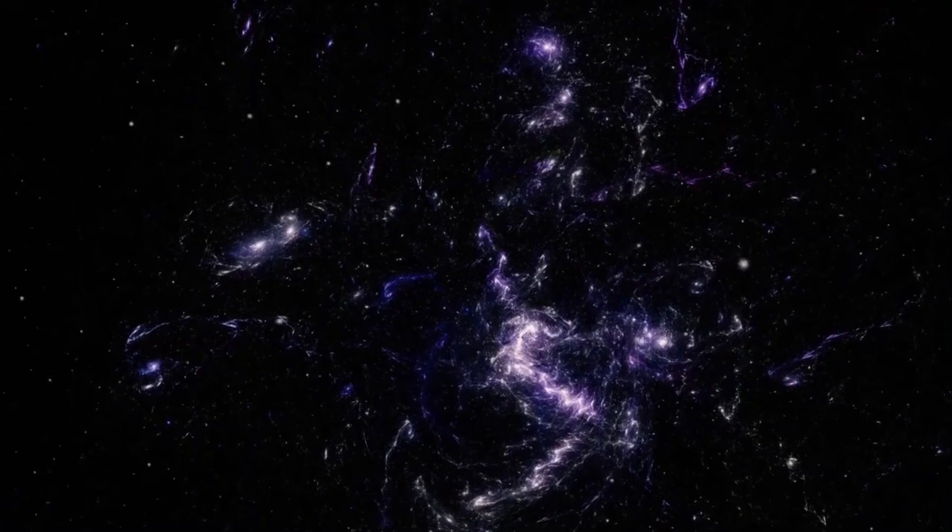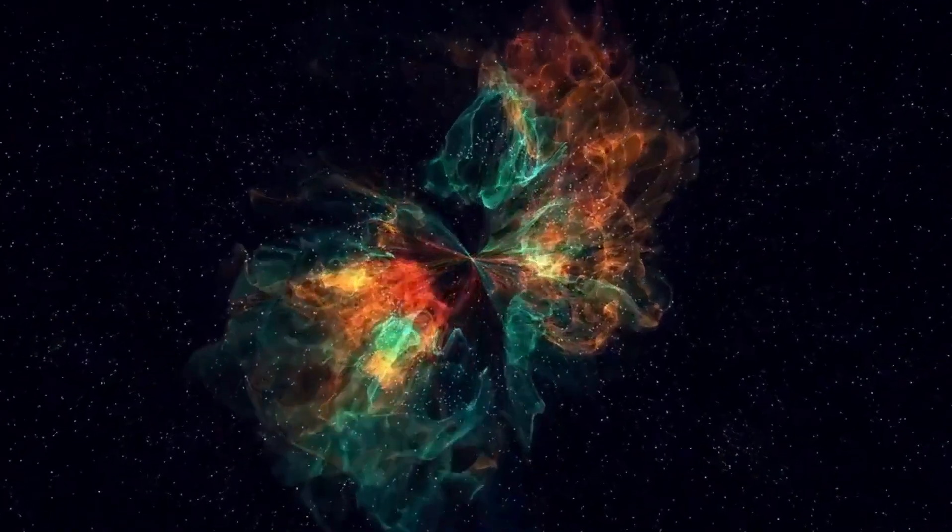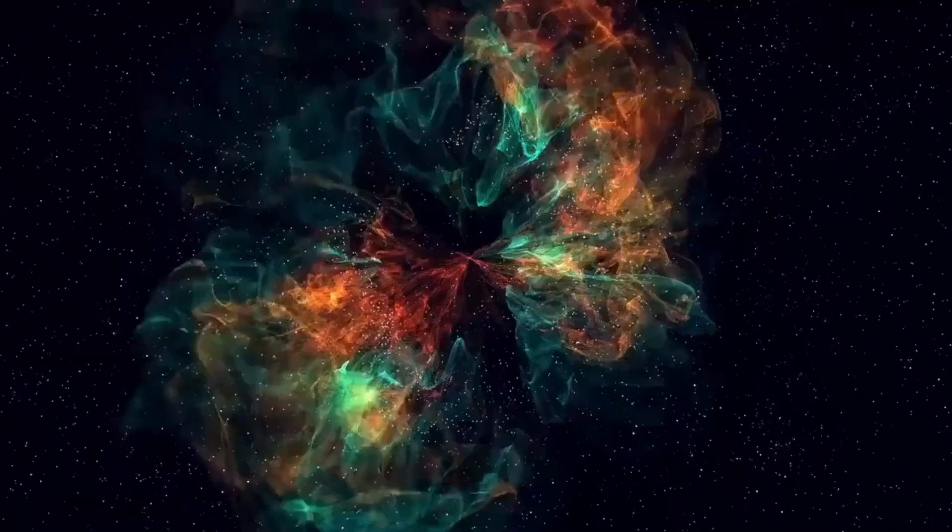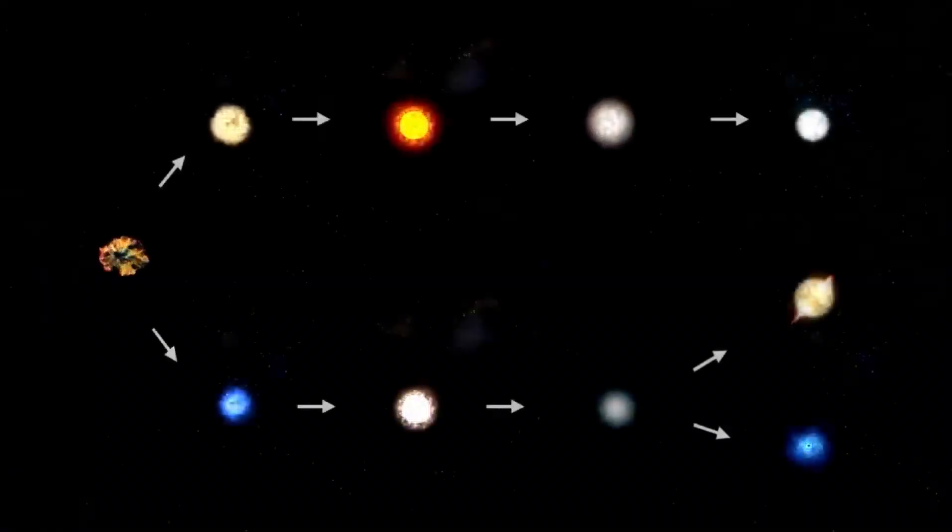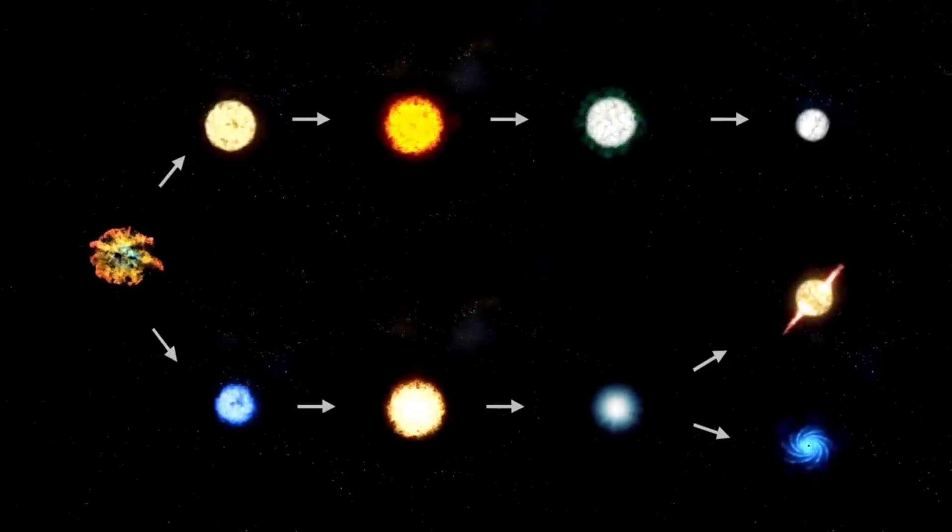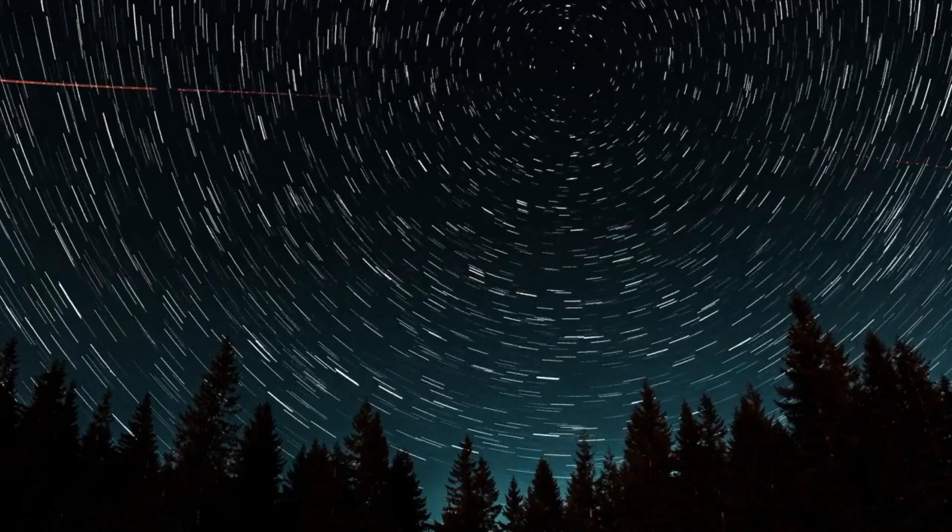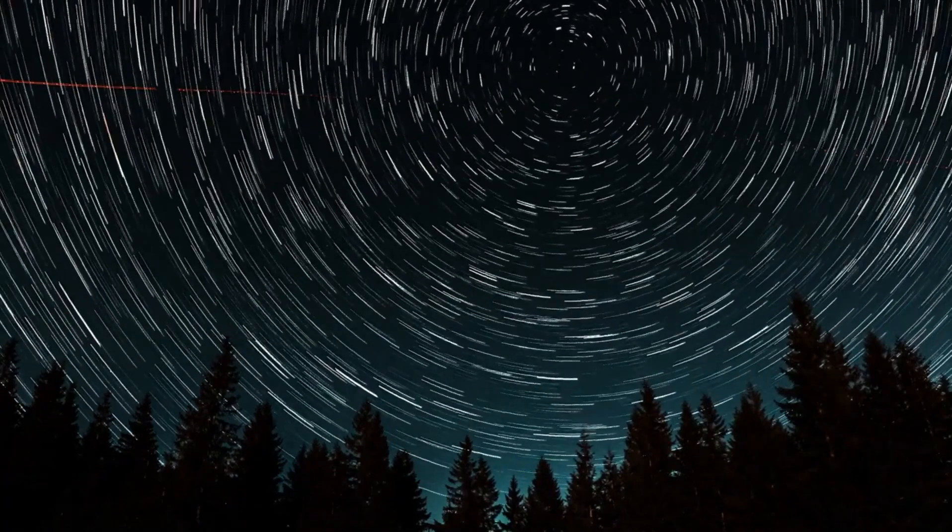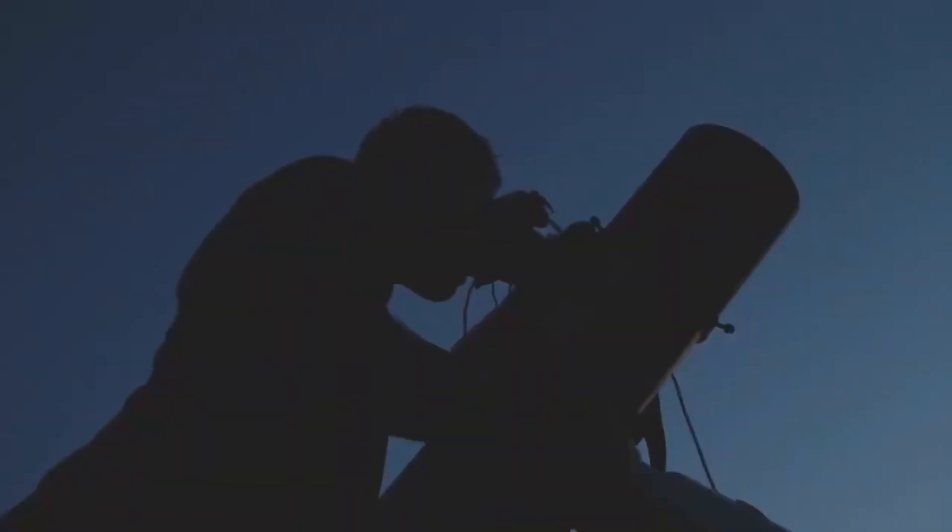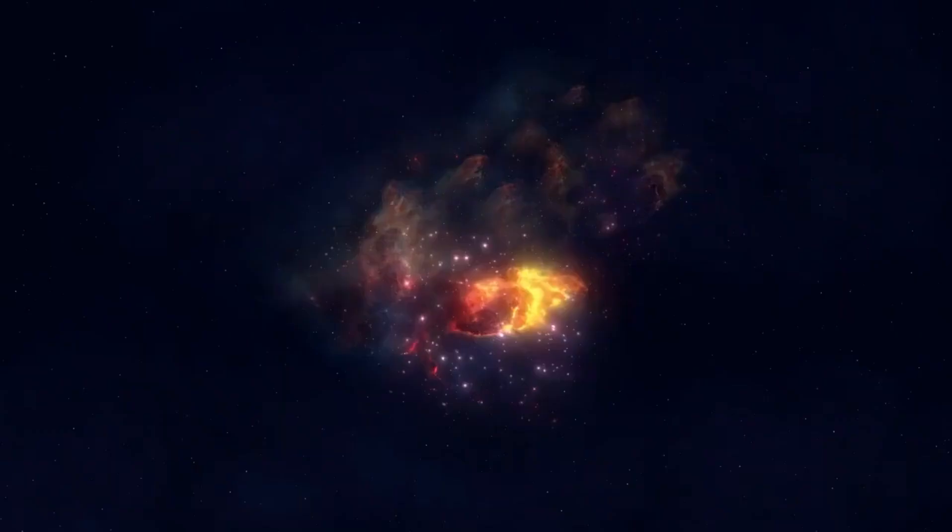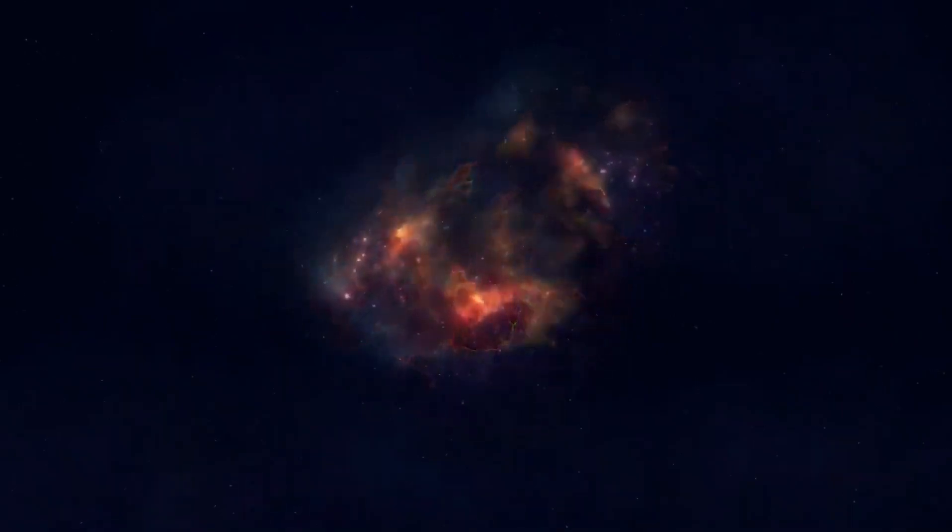If Betelgeuse were to go supernova, it would be a once-in-a-lifetime event for humanity. The explosion would be visible to the naked eye, even in daylight, and would remain bright in the night sky for weeks or even months. The light from the supernova would travel 650 years to reach Earth, meaning that the explosion would have actually occurred in the 14th century. For astronomers, the event would provide an unprecedented opportunity to study the life cycle of massive stars and the processes that lead to supernovae. It would also offer insights into the formation of neutron stars and black holes, the remnants left behind after a supernova.